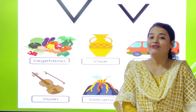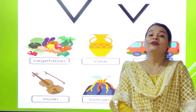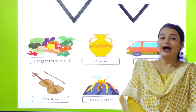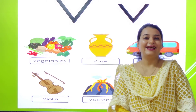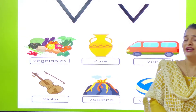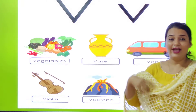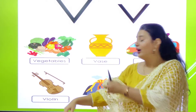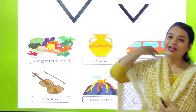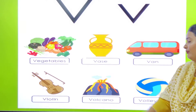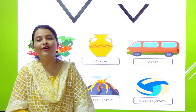V for vegetables, V for vase — vase is one of the containers where you keep flowers for decoration. Then V for violin, V for volcano, and V for volleyball. We all love to play volleyball — yes, one of the games. So V for volleyball also.